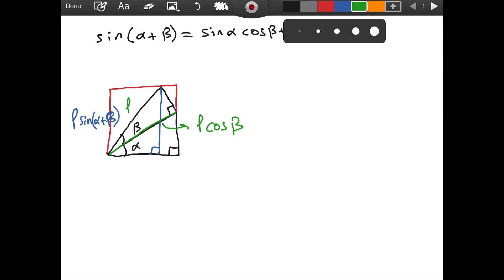Now what about this one? It is the opposite side, so it is simply L times sine of beta. Here we can now express this side. The hypotenuse is L times cosine of beta, and this is the opposite side in the alpha triangle. So we put sine of alpha.